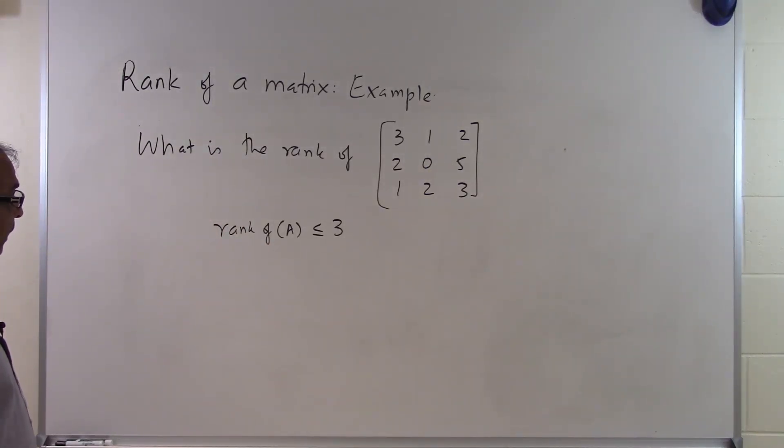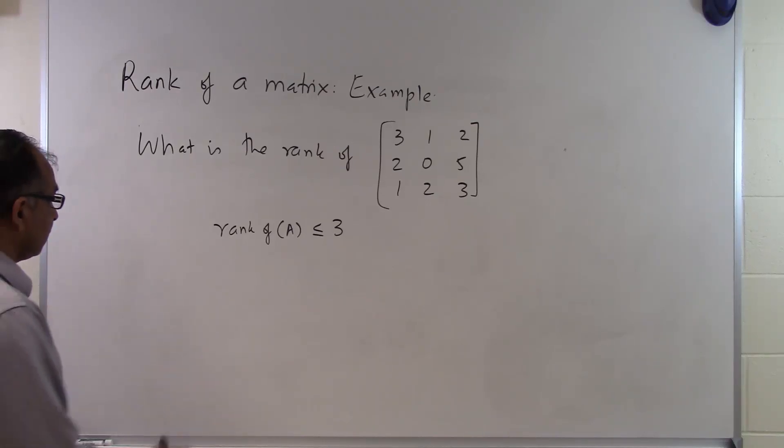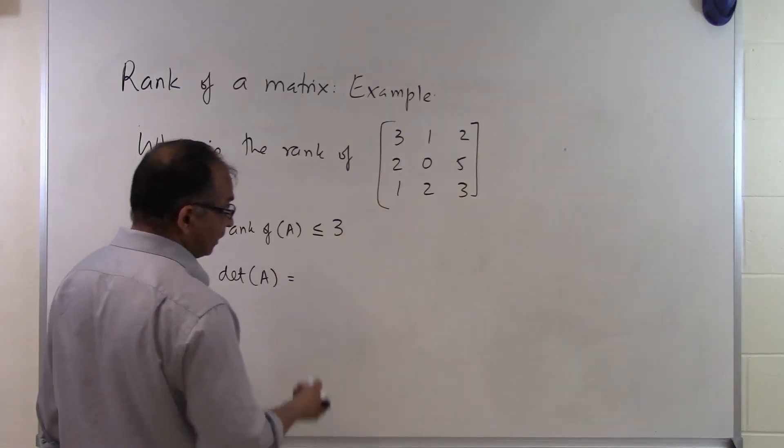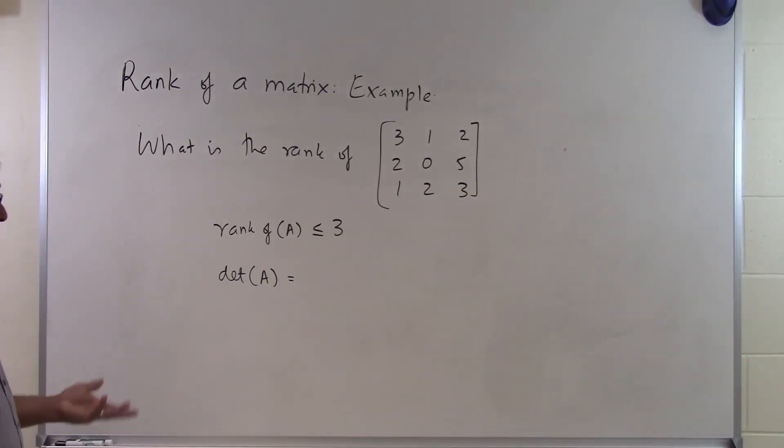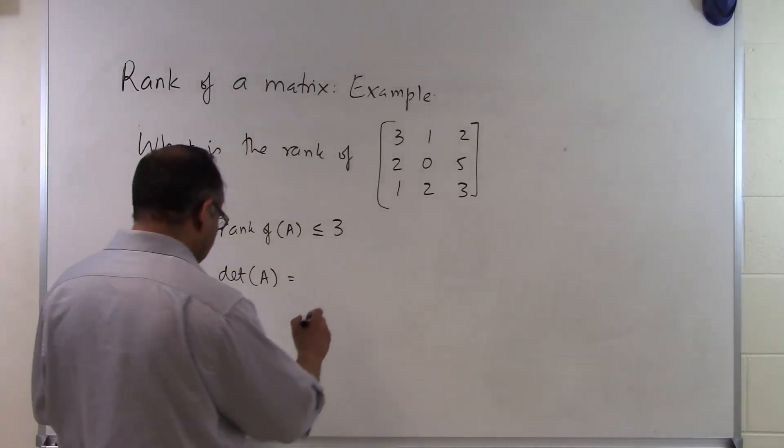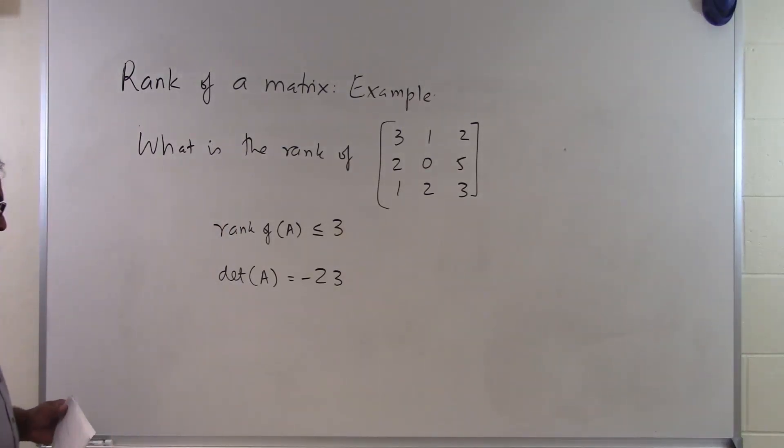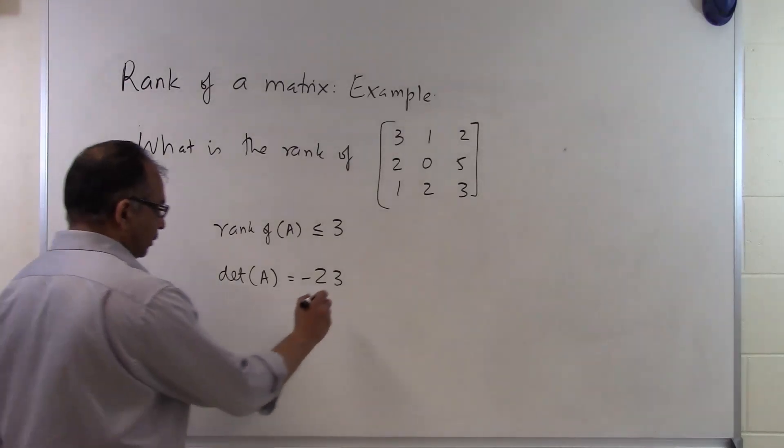So how do we find out what is the rank of A? If I look at the determinant of A, because it's a 3 by 3 matrix and that's the largest submatrix which I can find, the determinant of A itself is minus 23. It's not equal to 0.